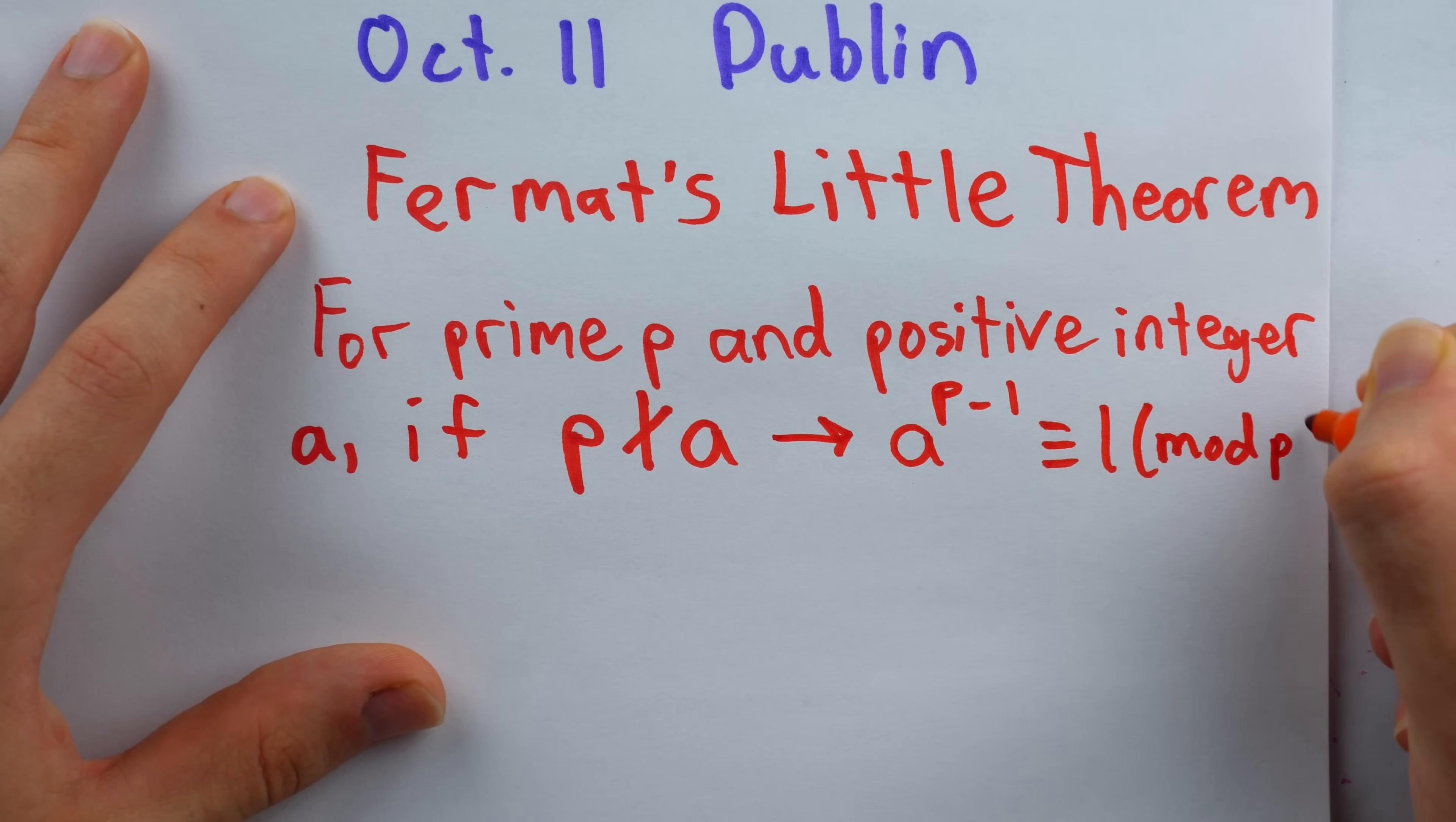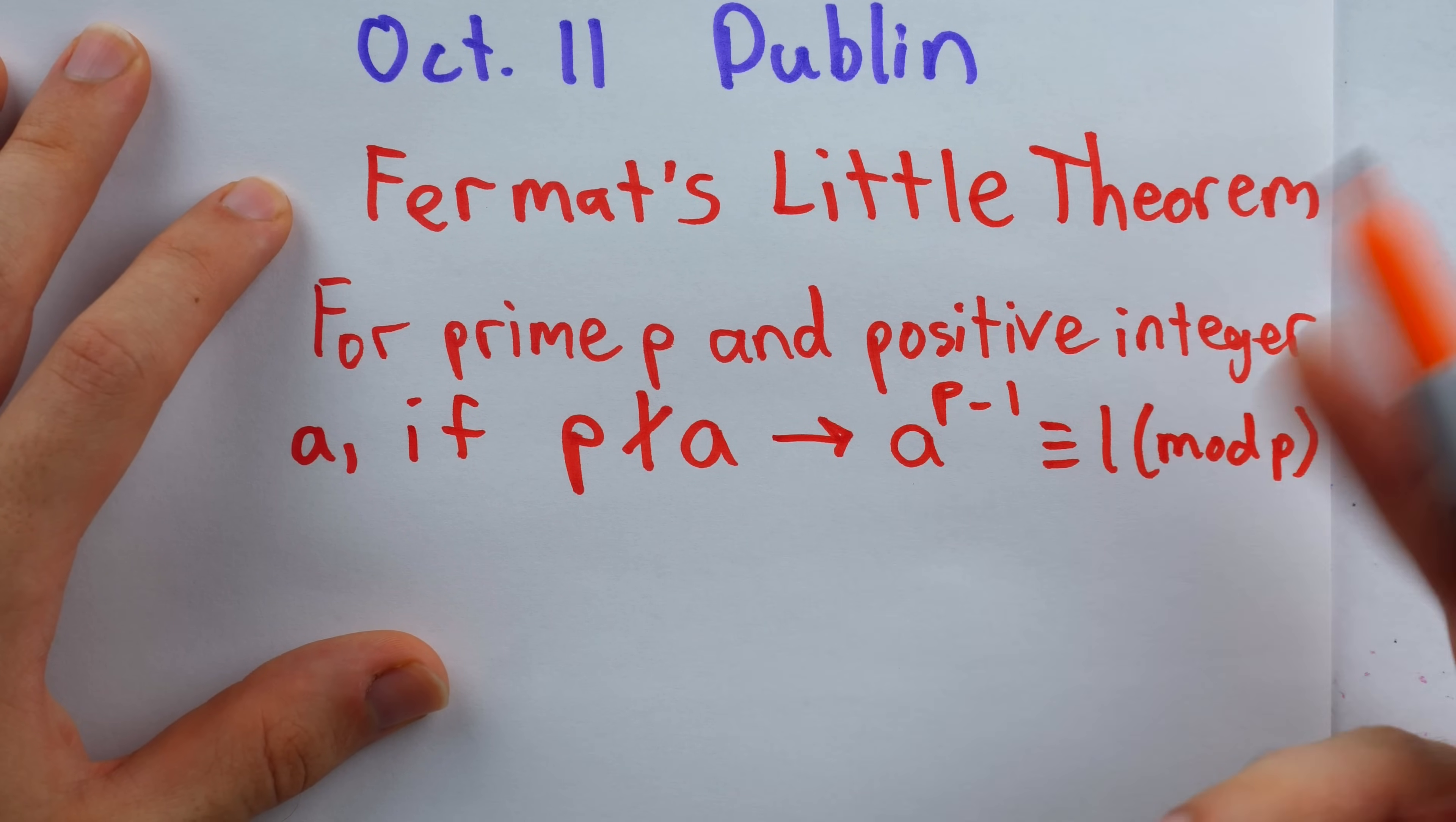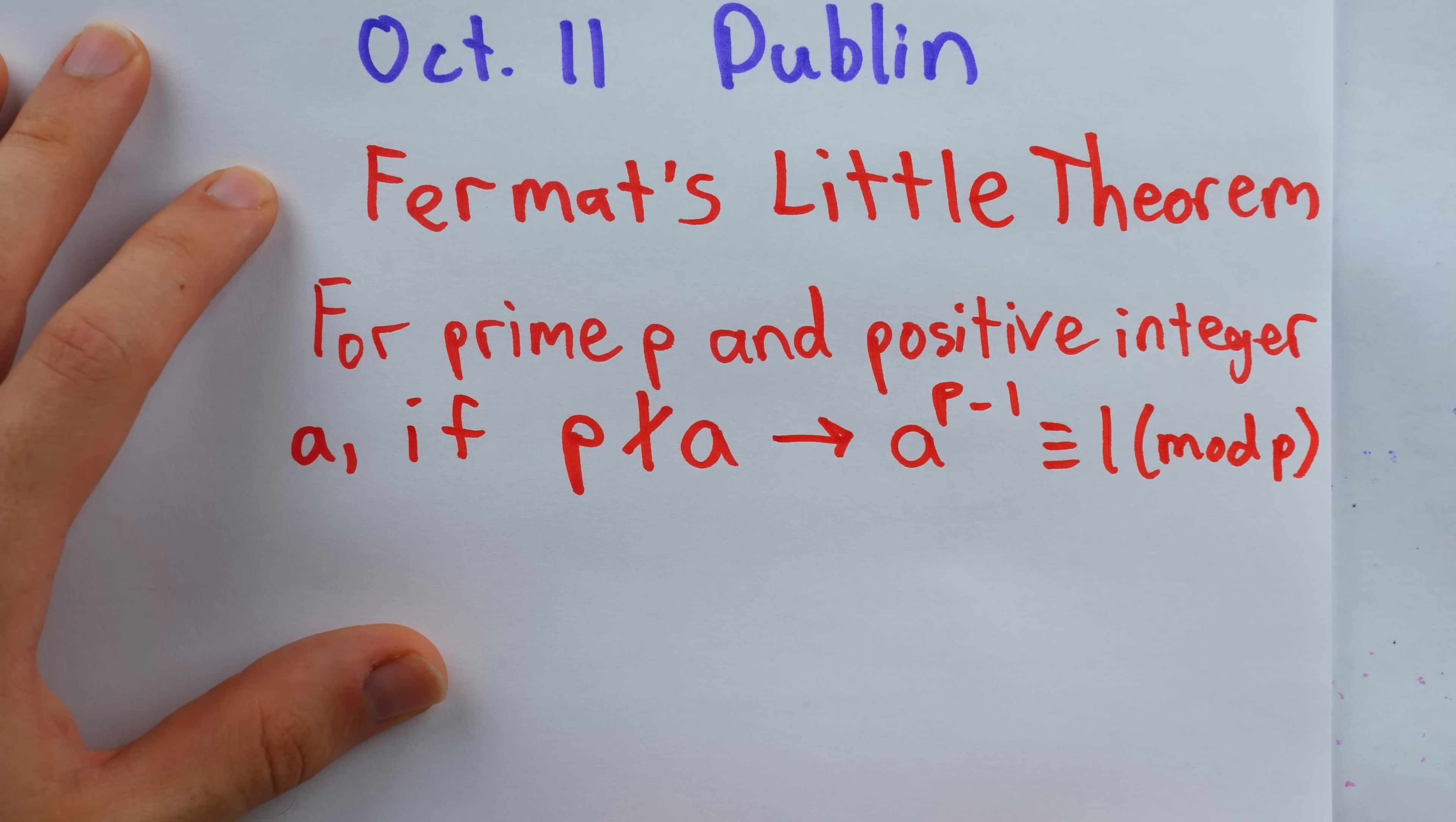If you don't know what this congruent modulo stuff means, said another way, this would imply that a to the p minus one minus one is a multiple of p. So just again, said another way, this says that if p does not divide a, then a to the p minus one minus one is divisible by p. If you do know how modular congruence works, then of course it just means that.